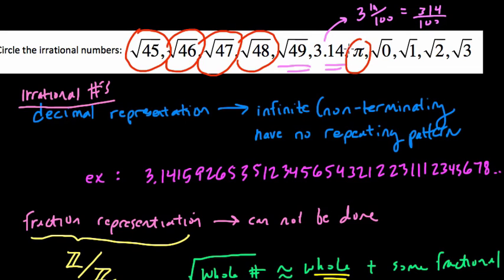Pi is our famous irrational number there. And also we have these other numbers. Well, the square root of 0, that's just 0, because 0 times 0 is 0, so it's rational.